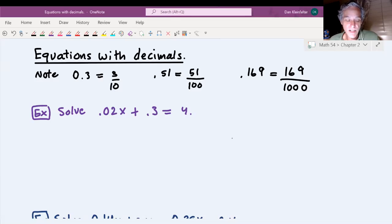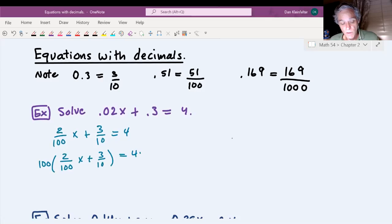If I rewrite this as fractions, we would have 2 one hundredths times x plus 3 tenths and that's equal to 4. Here the LCM of 1 and 10 is going to be 100. So we're going to multiply both sides by 100. That will be multiplied by 2 one hundredths x and 3 tenths. The right side will be 4 times 100 also.